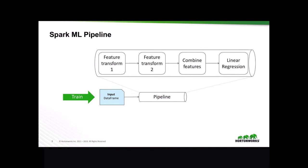Feature transformation 1, feature transformation 2, combination of features, before finally a linear regression algorithm is applied. Once the model is trained and we export the model, we can use it to predict our data using another input data frame that contains the incoming data to finally have an output data frame that contains the results or the prediction of our model.